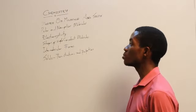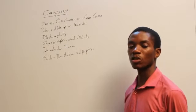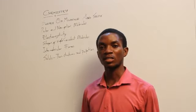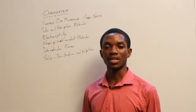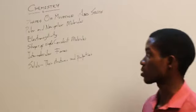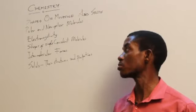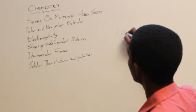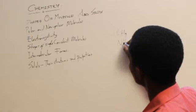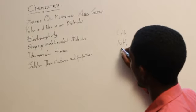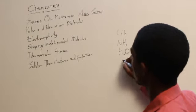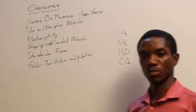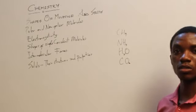Let's take a look at the shapes of covalent molecules. We'll discuss water, ammonia, methane, and carbon dioxide as examples. So let's consider the shapes of these simple covalent molecules: methane, ammonia, water, and carbon dioxide.